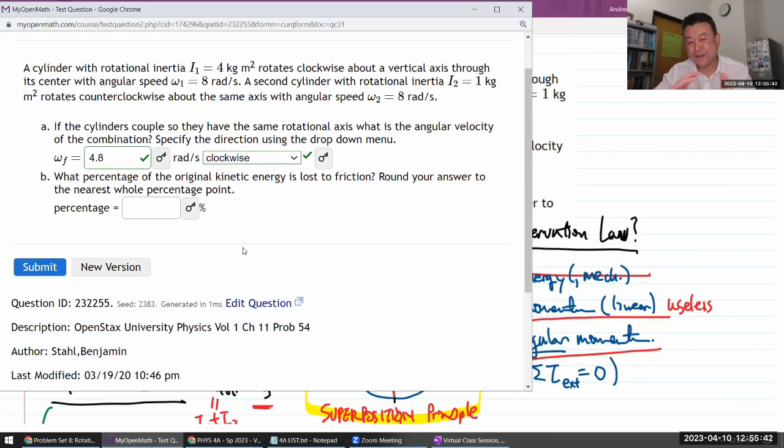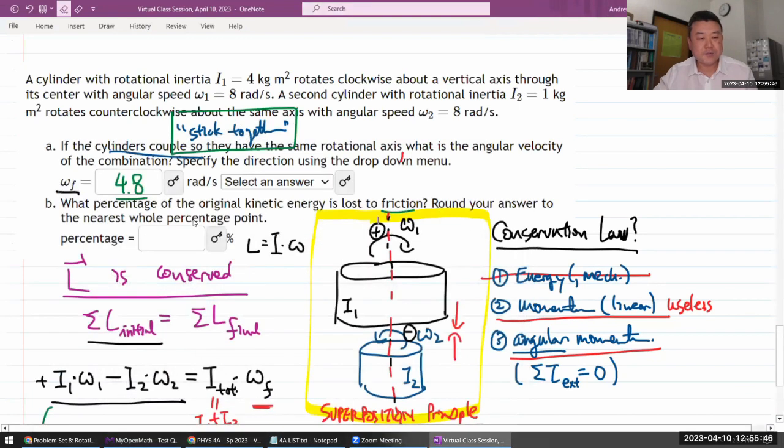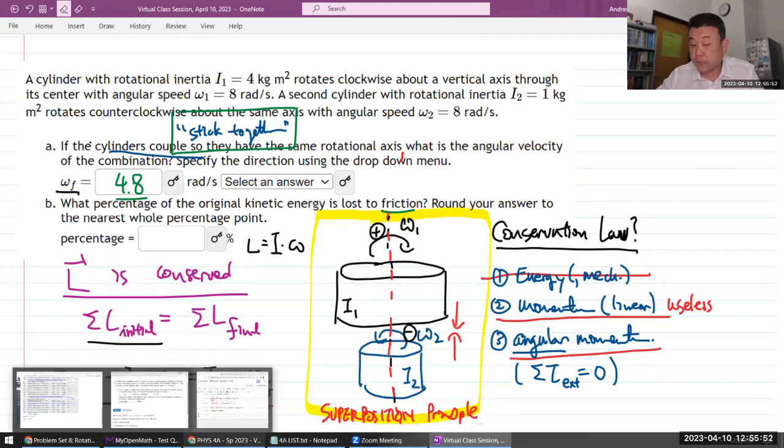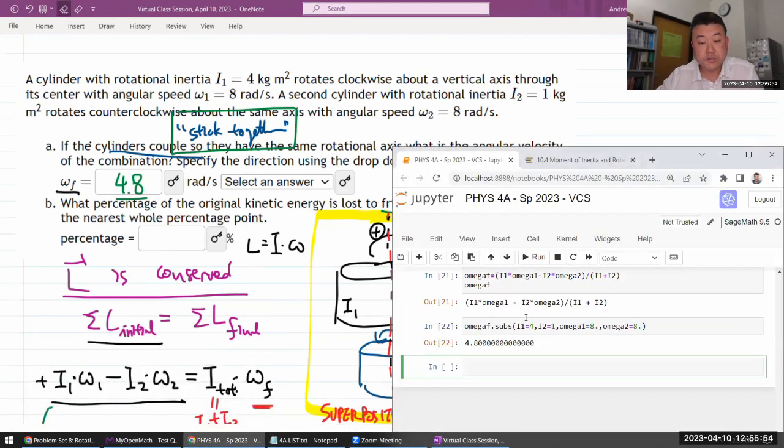Okay. Now that we have some confidence that omega final that we calculated is correct, let's just work out. I guess the easiest thing to do is just to calculate what the kinetic energies are before the collision and after the collision and just take a look. So my kinetic energy initially would be one half times its angular velocity times its angular speed squared.